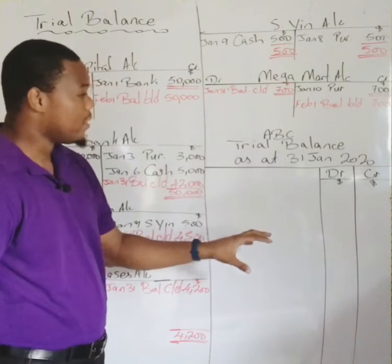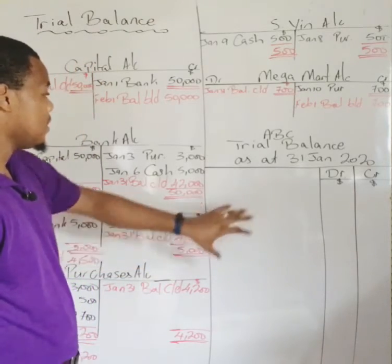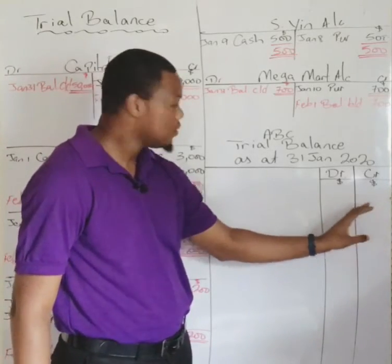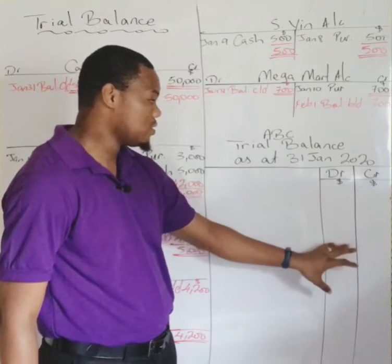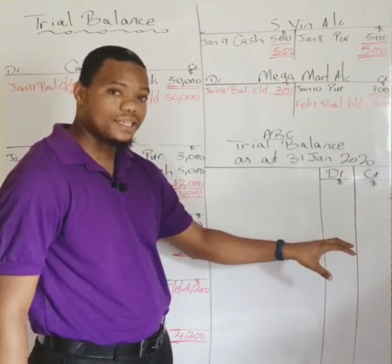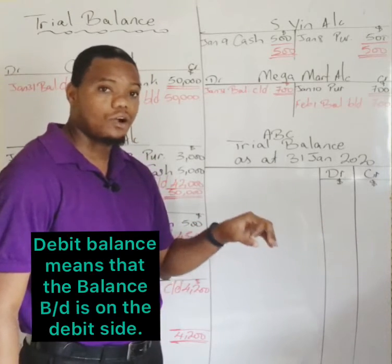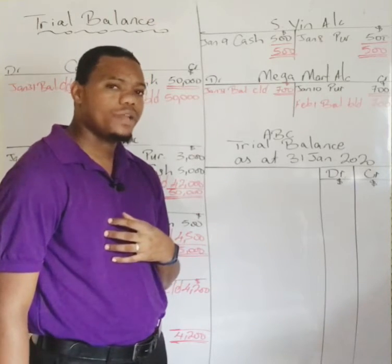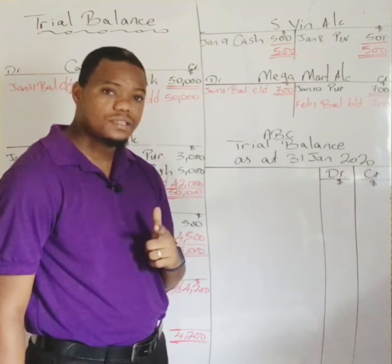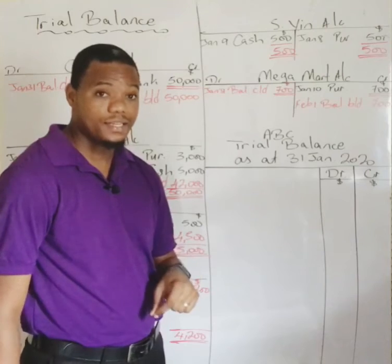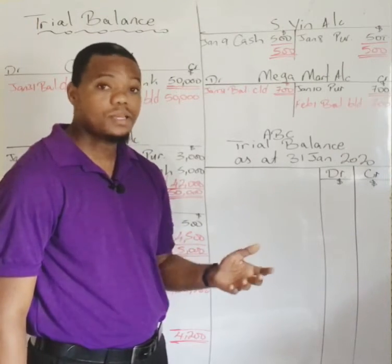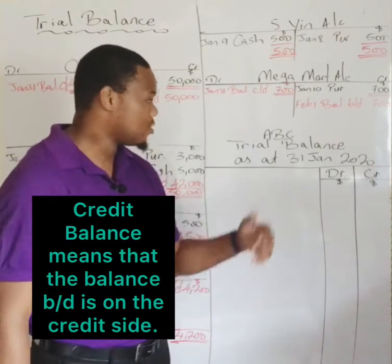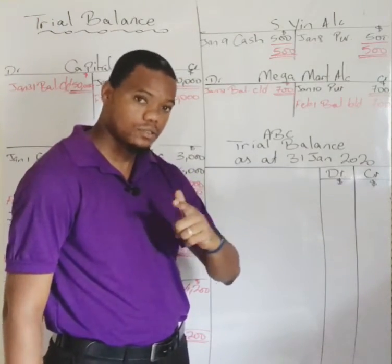Extracting a trial balance is really simple. The trial balance has three columns: one for the account names, a debit column, and a credit column. The debit column is for accounts that have a debit balance, meaning the balance brought down is on the debit side of that account. Similarly, if an account has a credit balance, the balance brought down is on the credit side.